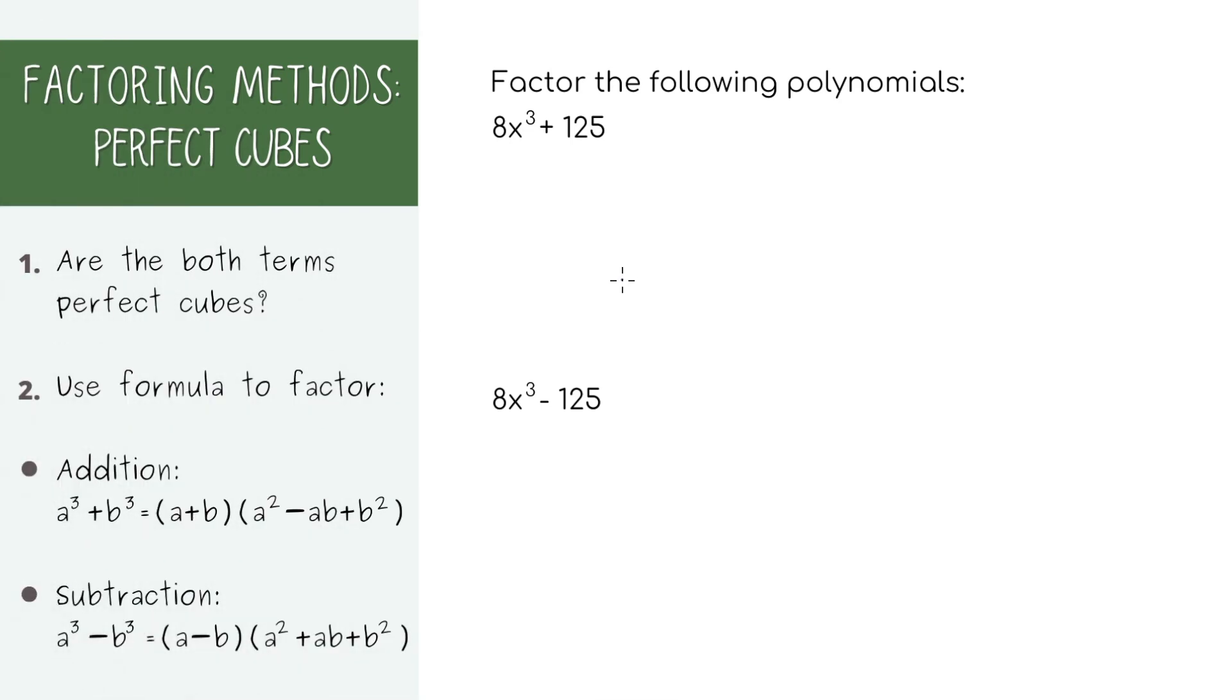There are also formulas for perfect cubes and with the cubes, they work whether you're adding them or subtracting them. To help memorize the cubed formulas, notice that for the sum of cubes, the first sign is positive and for the difference of cubes, the first sign is negative. Then for the next sign, it flips and the last sign for both is always positive. Hopefully that helps you memorize the formula. It's probably the easiest thing to slip up on.